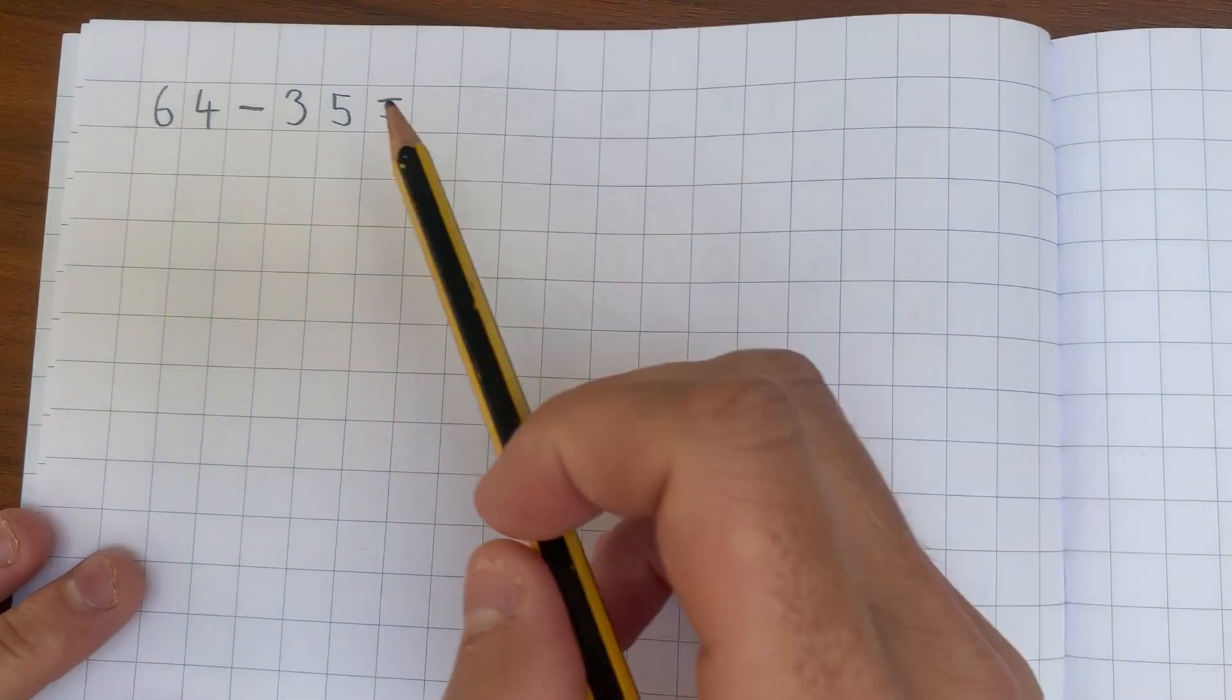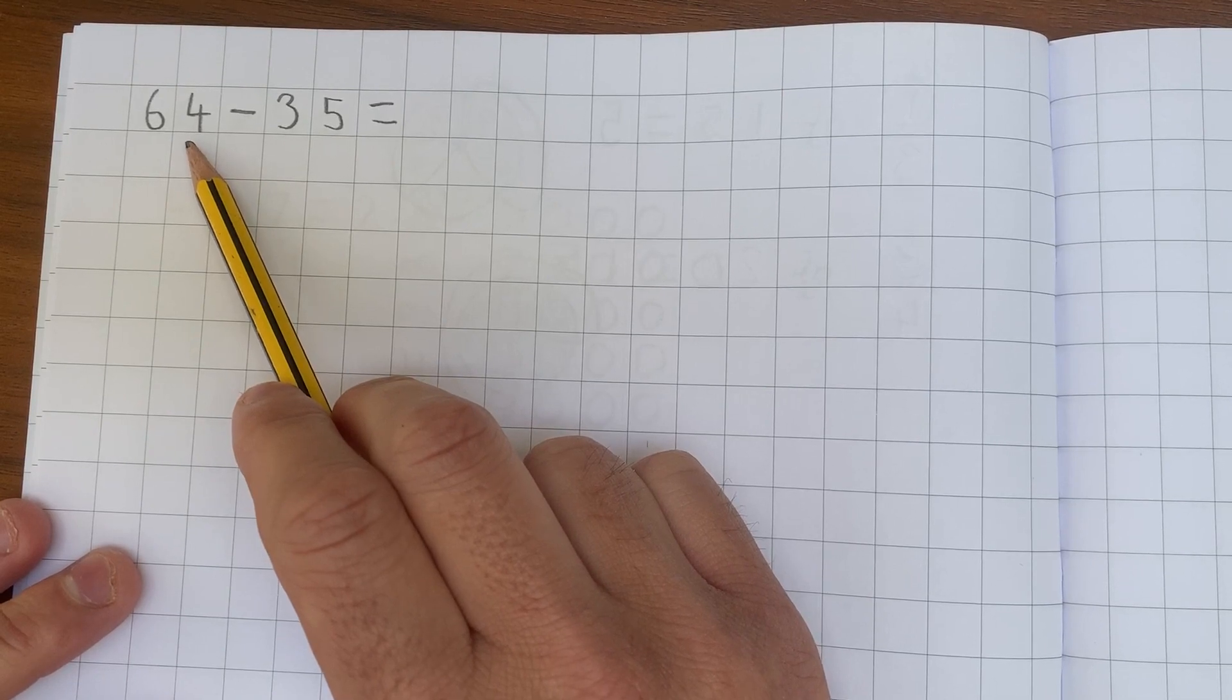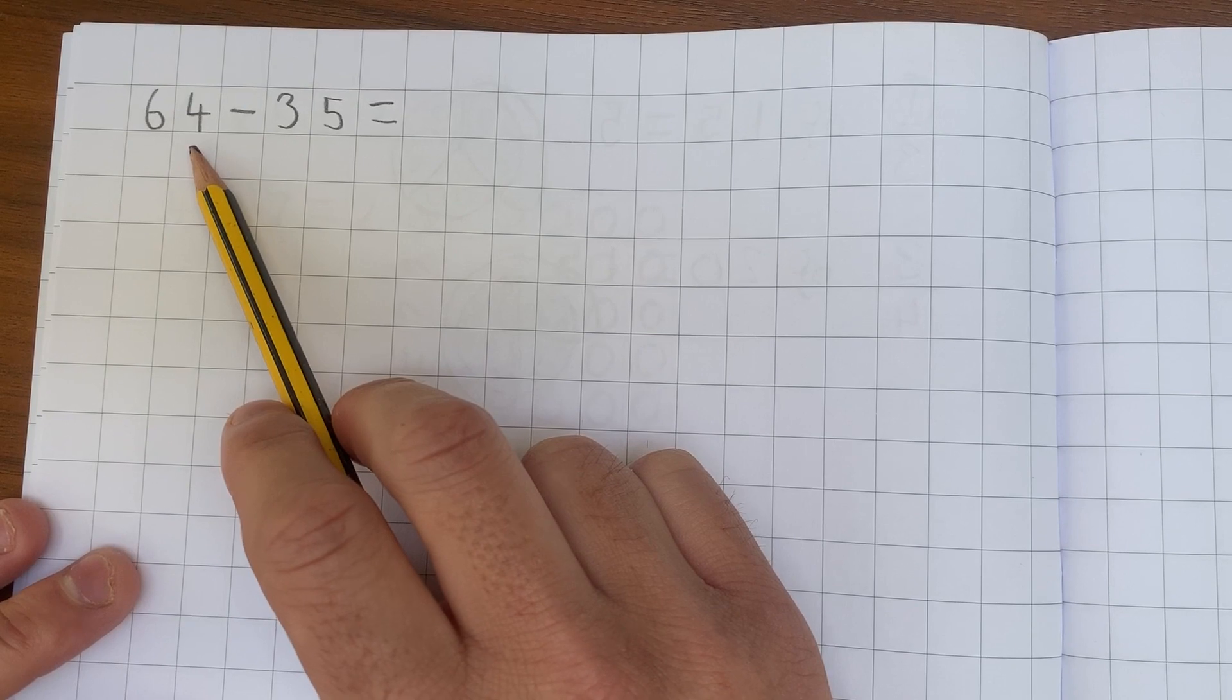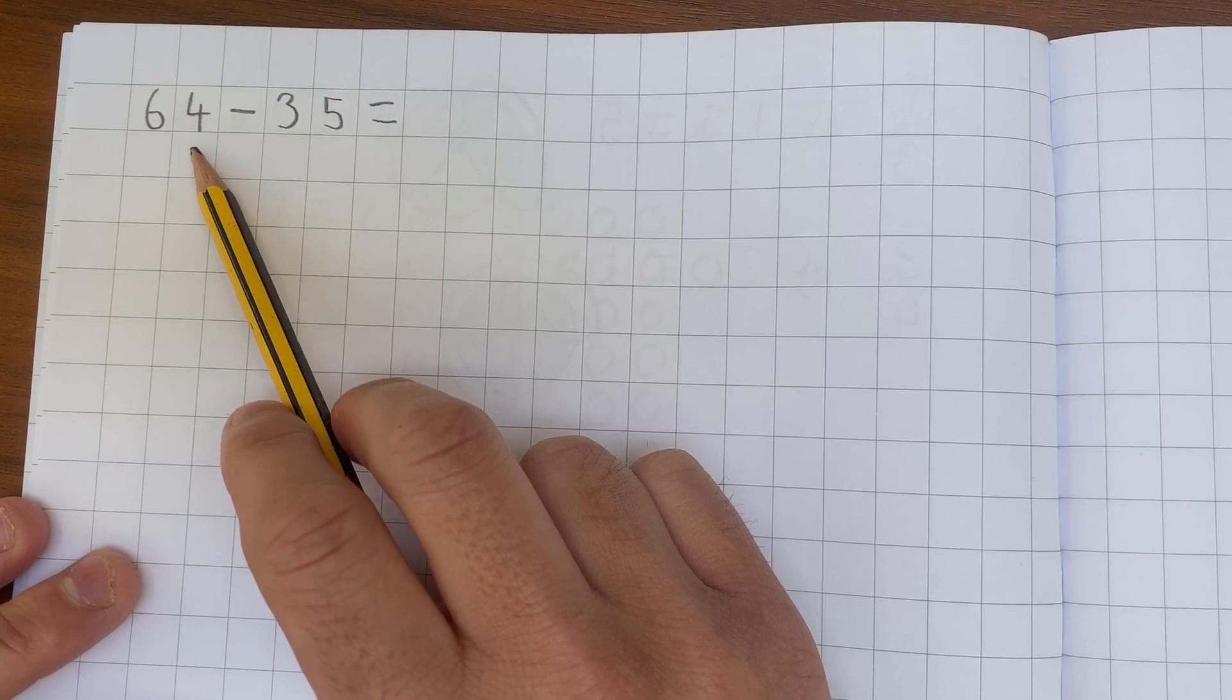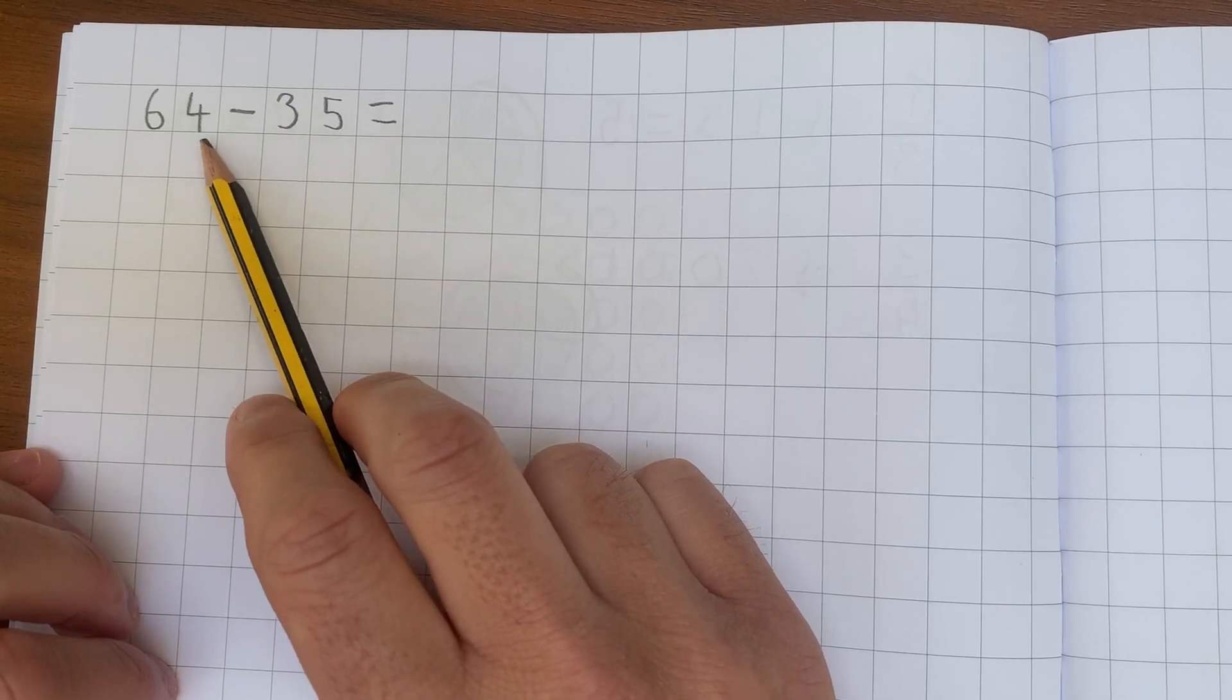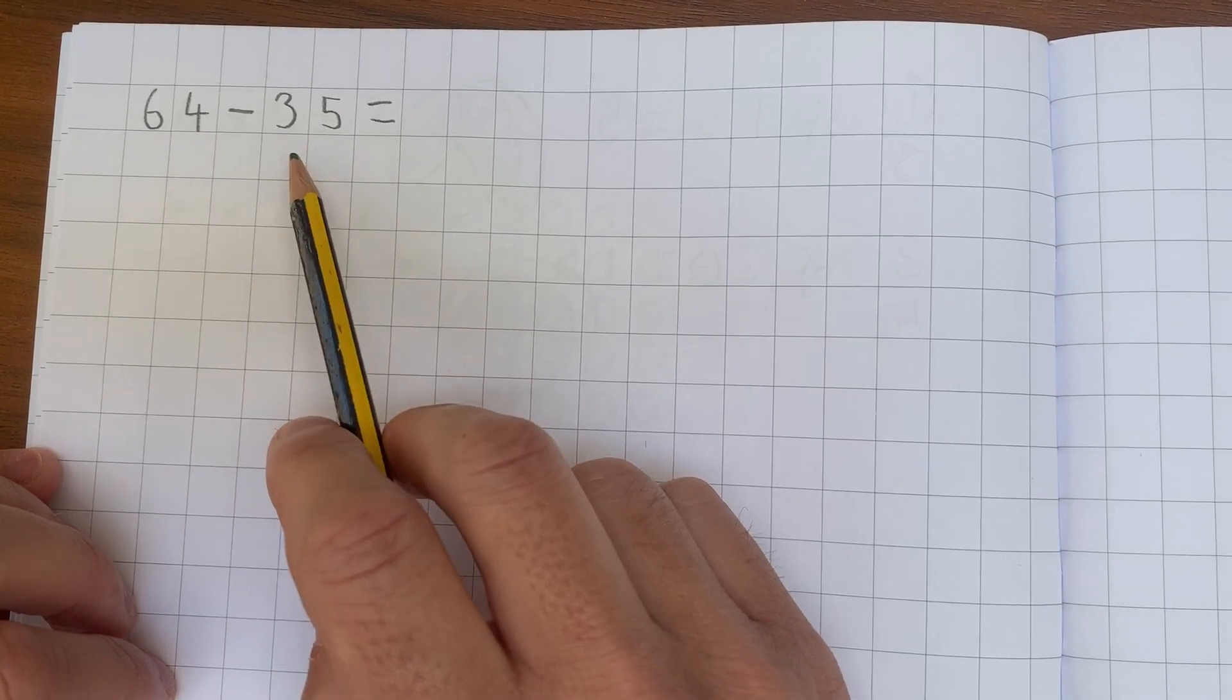In this video, I'm going to show you how to subtract a two-digit number from another two-digit number using a blank number line. This process is very similar to how we add two two-digit numbers together. If you've not seen that video yet, it may be worth watching that video showing you how to add two-digit numbers before watching this one. The process is very similar.